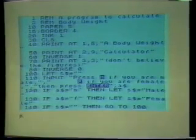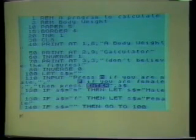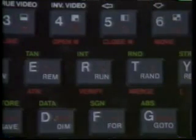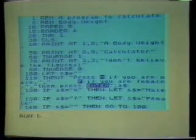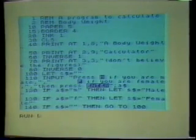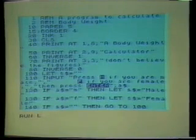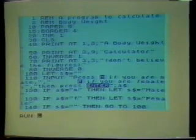That BORDER statement will only be executed when we run the program. To run it, press R — the R key has the word RUN on it. BASIC gives us the word RUN, and when we press Enter, the program starts to run. Our BORDER statement asking for a green border produces that effect. We won't look at the rest of the program now, but we will look at some of the BASIC statements within it.